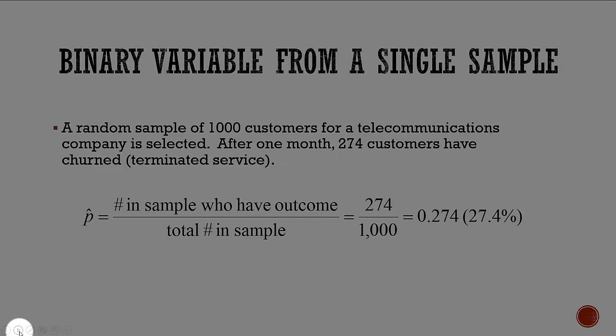In this video we're going to extend the ideas of proportions — one and two proportions — and take a look at the notion of risk. We'll first start with a proportion. Here we have 1,000 customers. After a month, 274 have churned or left, so we have 274 out of 1,000, or a proportion who have left of 0.274.